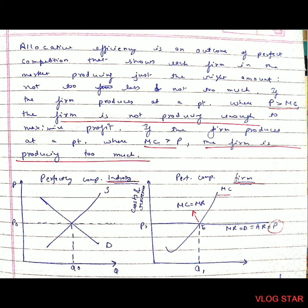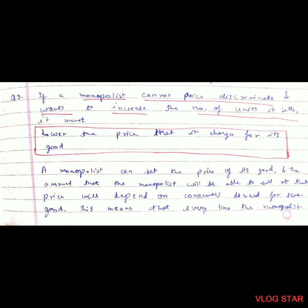Question 9: If a monopolist cannot price discriminate and wants to increase the number of units it sells, it must lower the price it charges for its goods. A monopolist can set the price of its good, and the amount it will be able to sell depends on consumer demand. This means every time the monopolist wants to increase the number of units sold, it must lower the price of the good.